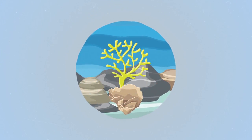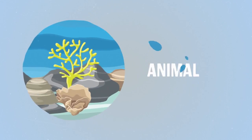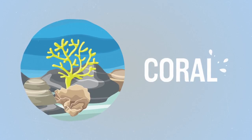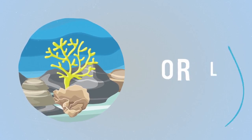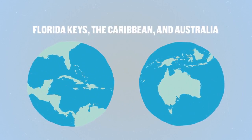This may look like a plant, but it's actually an animal. Coral is found in warm waters in places like the Florida Keys, the Caribbean, and Australia.